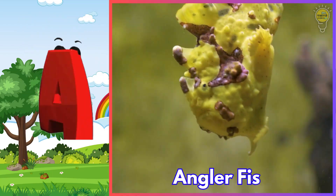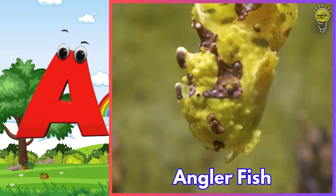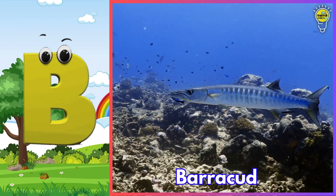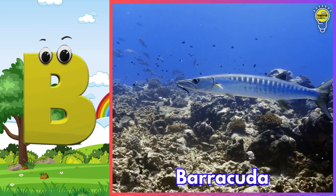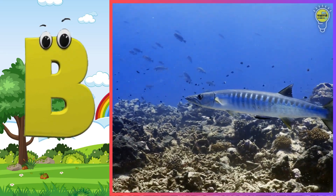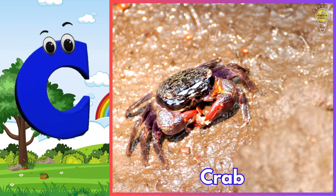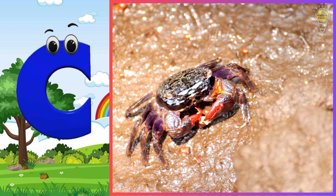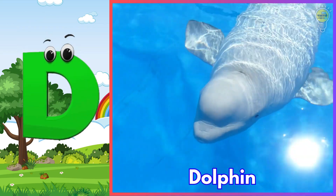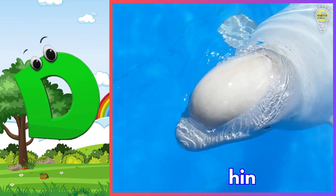A is for anglerfish. B is for barracuda. C is for crab. D is for dolphin.